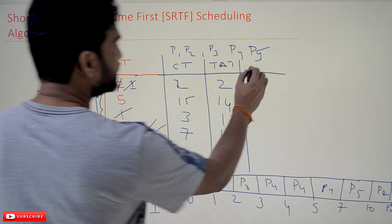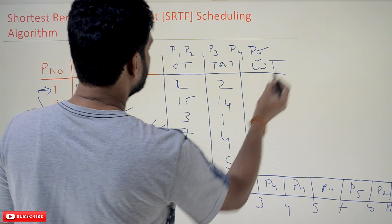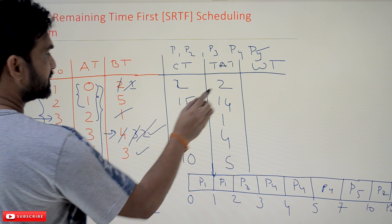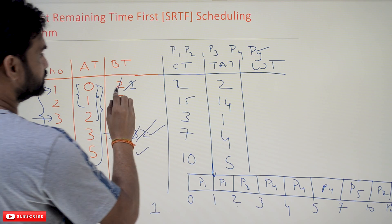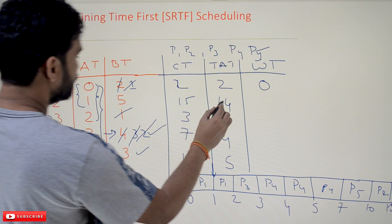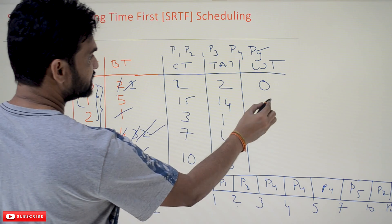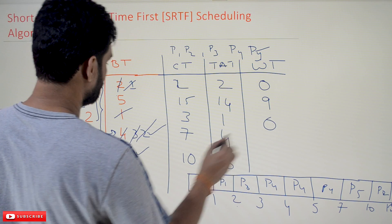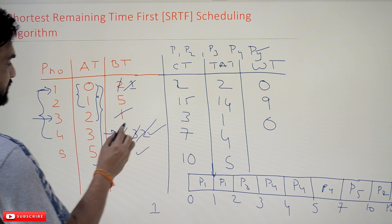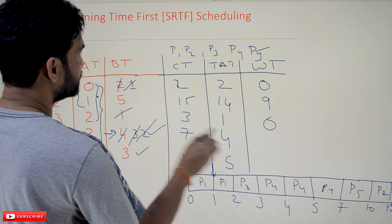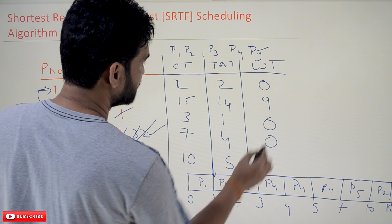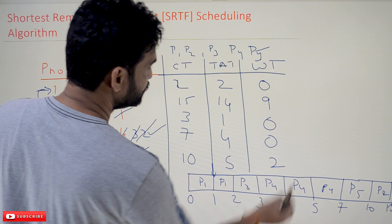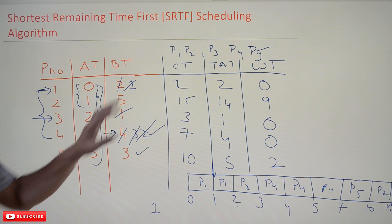Waiting time is turnaround time minus burst time: P1 = 2−2 = 0, P2 = 14−5 = 9, P3 = 1−1 = 0, P4 = 4−4 = 0, P5 = 5−3 = 2. So these are all the waiting times for each process.